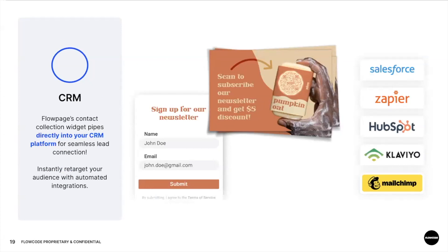Next we have CRM. We know how important it is to collect customer information, and our FlowPage tool integrates directly into your CRM platforms — Salesforce, Zapier, HubSpot, Klaviyo, and Mailchimp. We also have the ability to download the form directly from the platform itself, making it really seamless for retargeting and re-engaging your audience and potential leads.